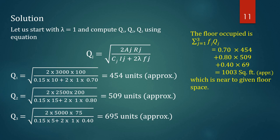Since 1003 square feet is very close to 1000 square feet, Q1 = 454 units, Q2 = 509 units, and Q3 = 695 units are sufficient and can be stored within the available floor space of 1000 square feet.